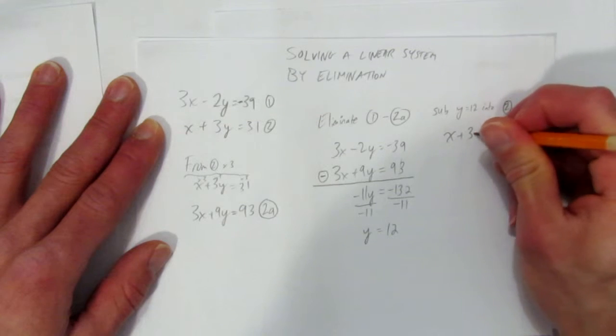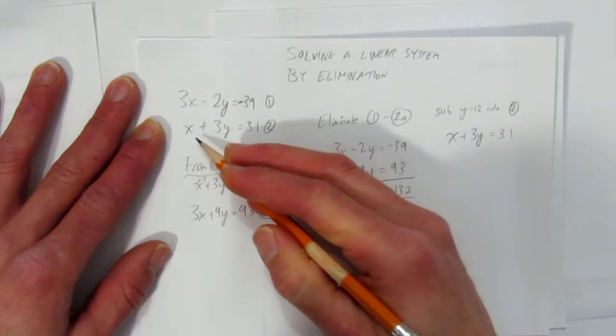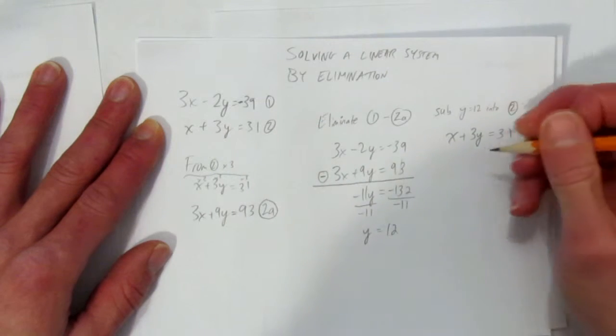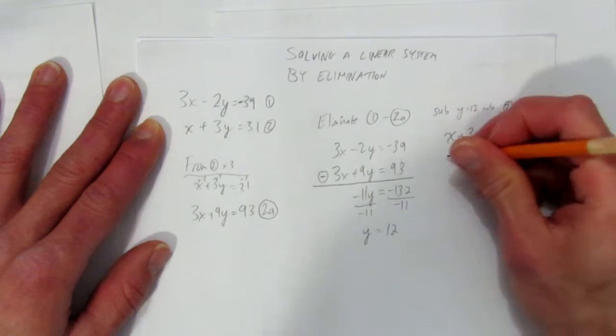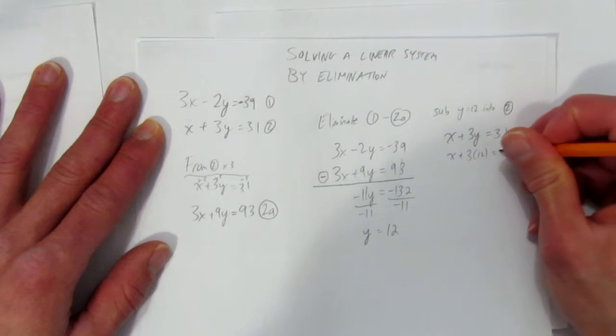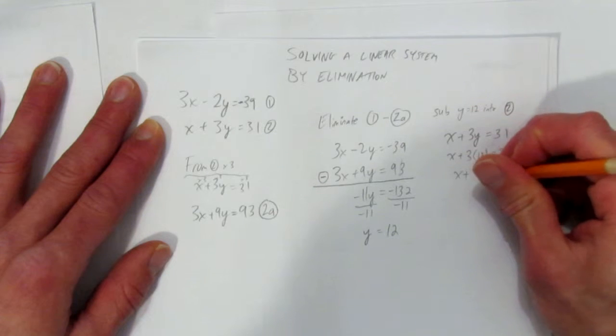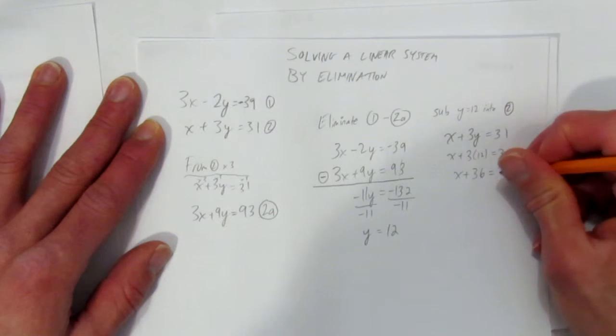So x plus 3y equals 31. I do think it's going to be easier to get the x here, but any of them will work, just would have taken a step or two more. So x plus 3 times 12 equals 31. So x plus, what's 3 times 12? 36 equals 31.